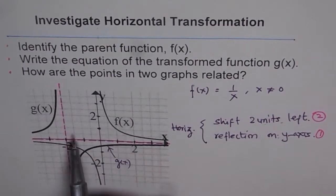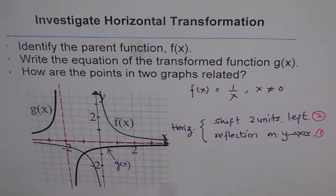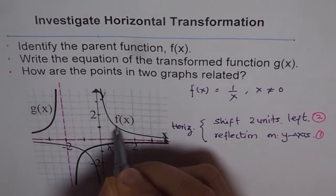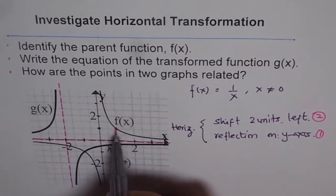Now we know it is reflected, so we at least know it is minus x. Now let us check, is there any stretch or compression? So for that, the best point is one, one. So this point is (1,1), it got reflected.